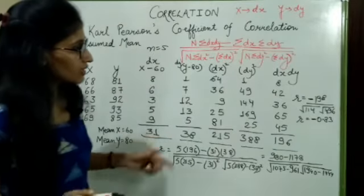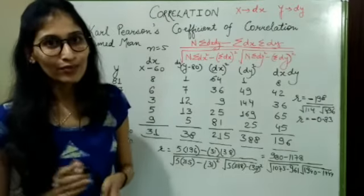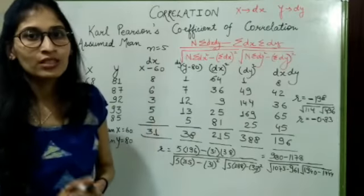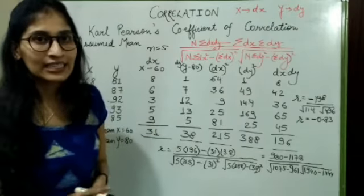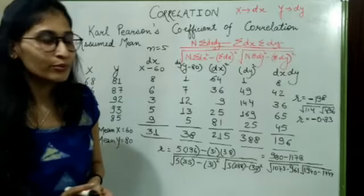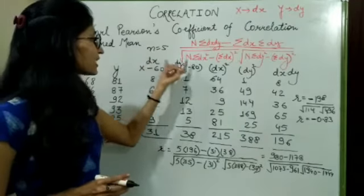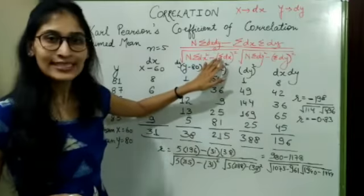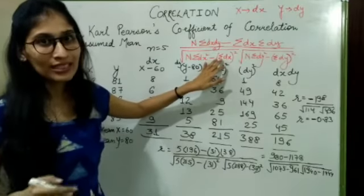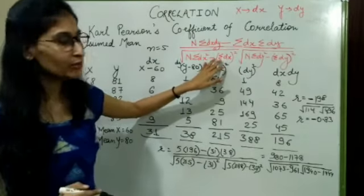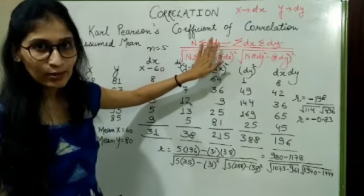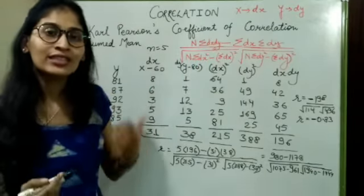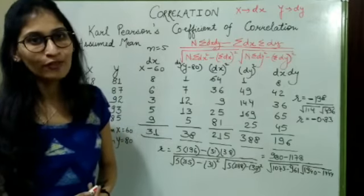So this is negative correlation. In the case of large values, instead of solving directly, we first assume a mean and find the values of dx and dy. The formula structure is the same for both direct method and assumed mean method — in direct method we use x and y values directly, and in assumed mean method we use the assumed variable values.